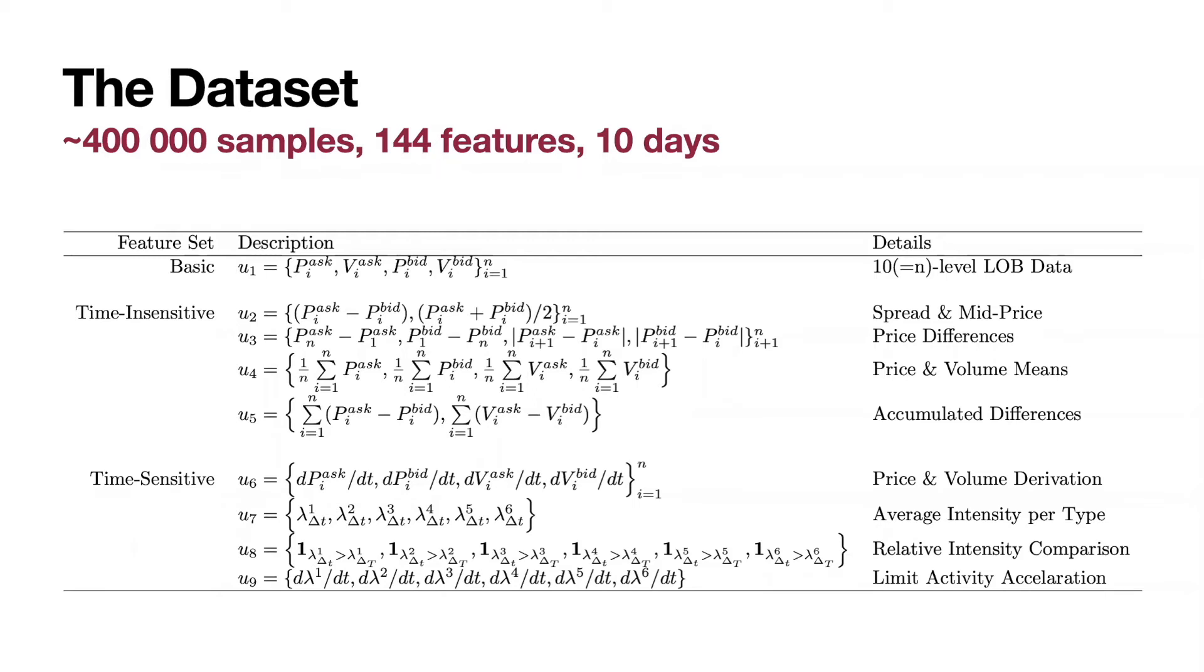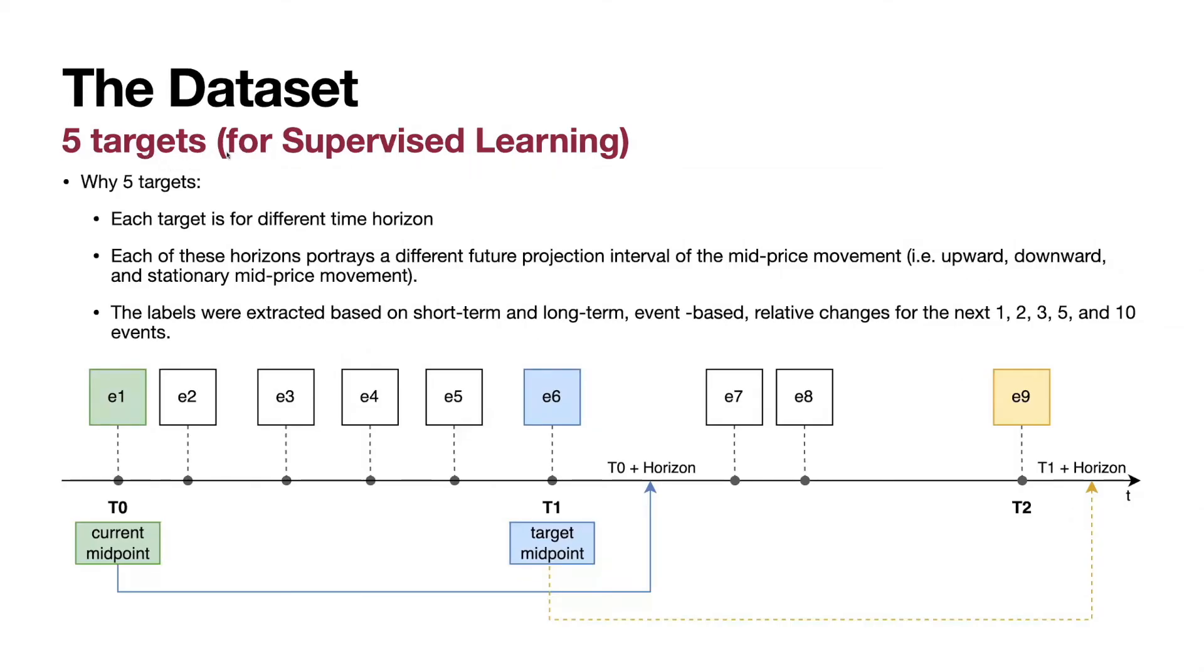First, do a feature importance study, then decide which to take. The target concept is important for supervised learning. For RL and Deep RL, there is no such concept as target. There is a reward function and the agent tries to maximize that. There are five targets presented in the data.